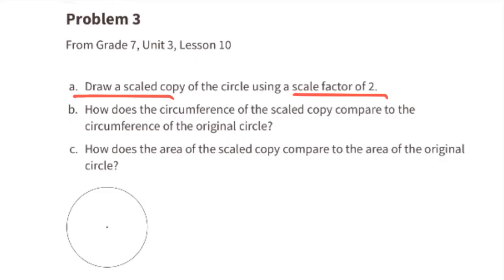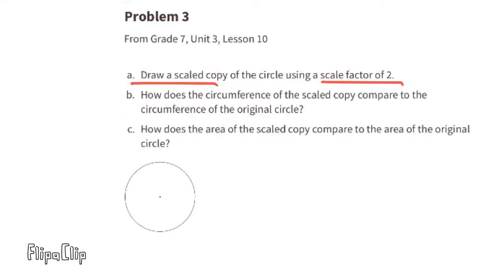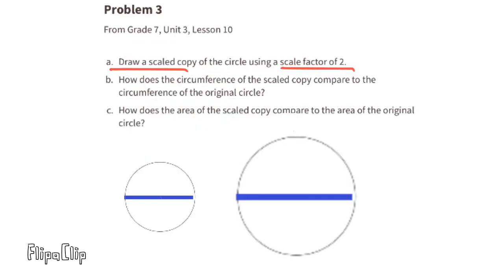Part a: draw a scaled copy of the circle using a scale factor of two. A scale factor of two means we need to double the diameter, so the scaled copy has a diameter that's doubled the original circle's diameter. Part b: how does the circumference of the scaled copy compare to the circumference of the original circle?